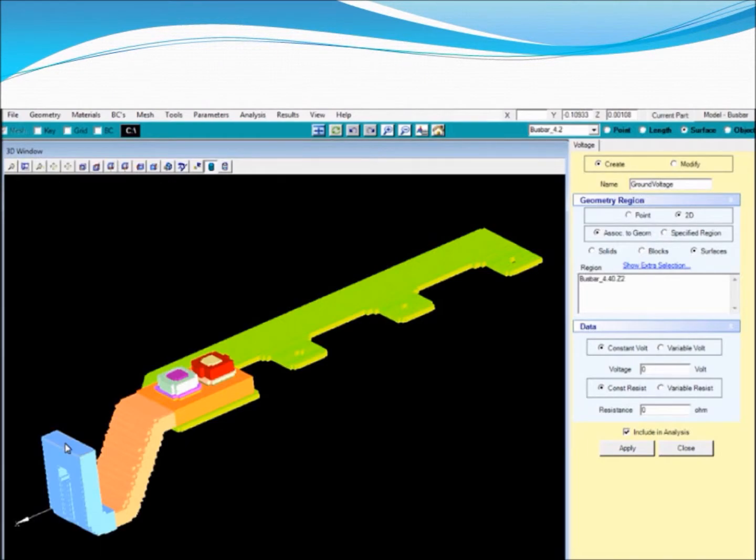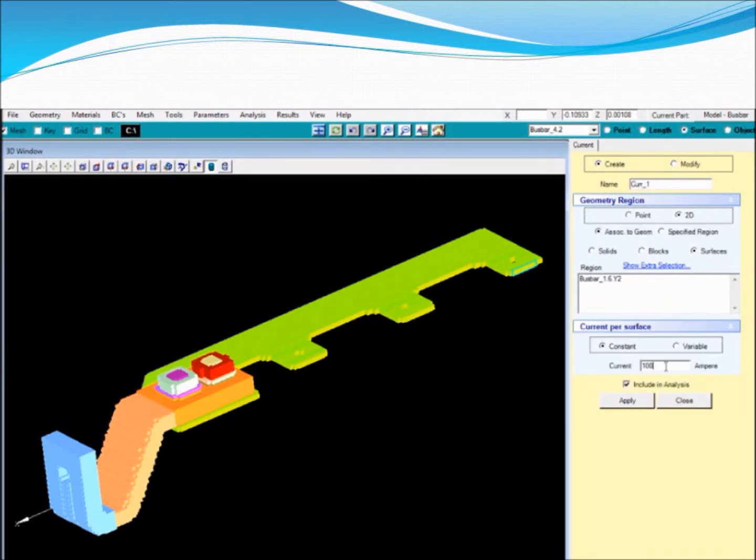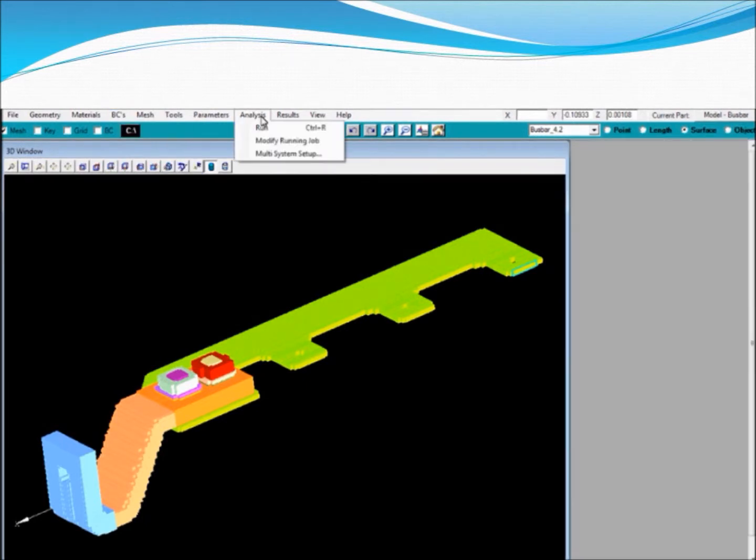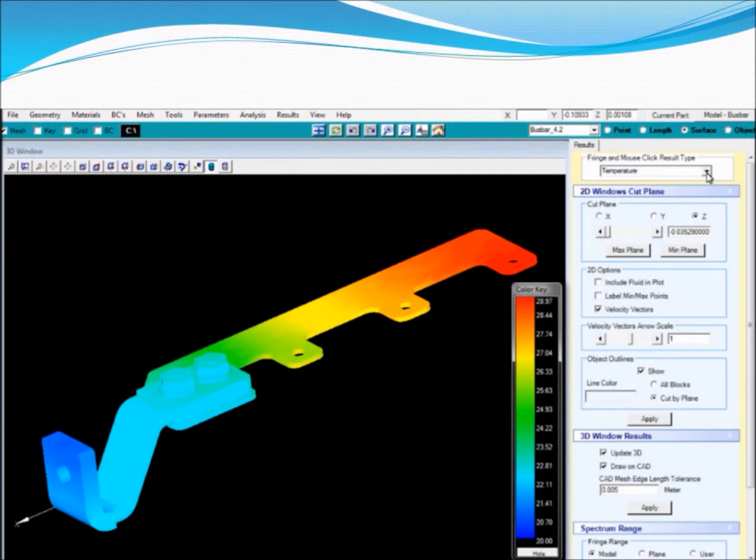By solving both the voltage and thermal fields simultaneously in one package, accuracy not found in other software is achieved. All heat from current flow is automatically determined, including trace and wire heating.